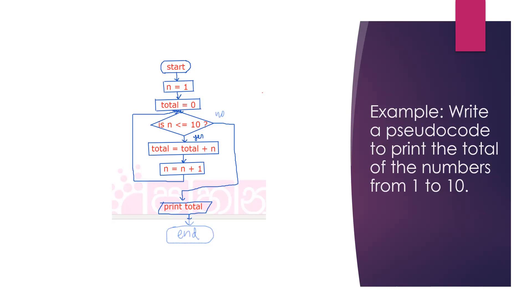Write a pseudocode to print the total of numbers from 1 to 10. You don't have to draw the flowchart, but write the pseudocode. In this one we are going to use a for loop structure.